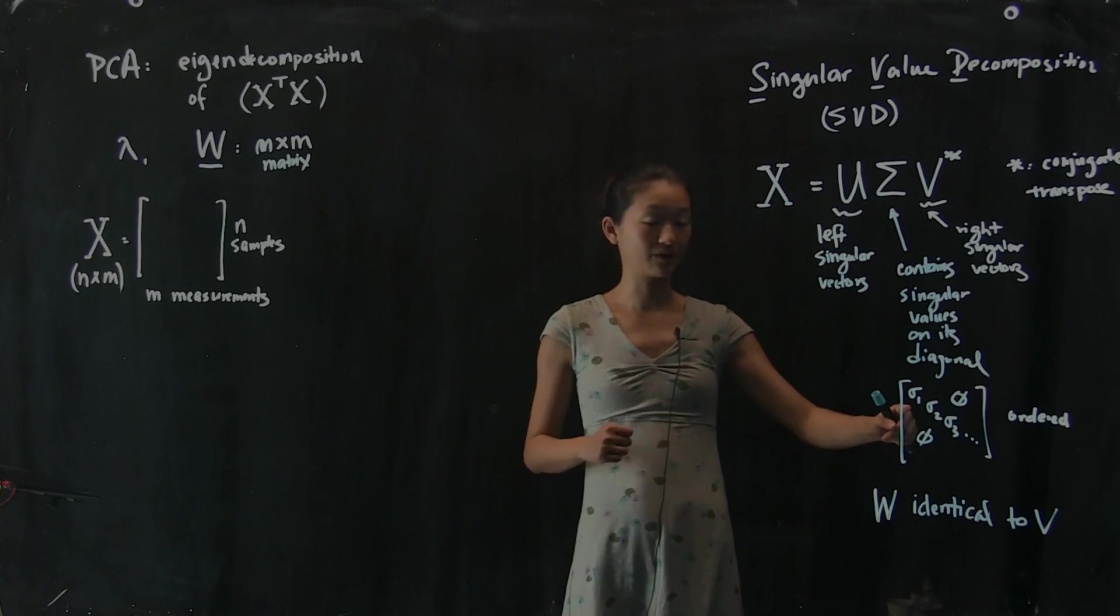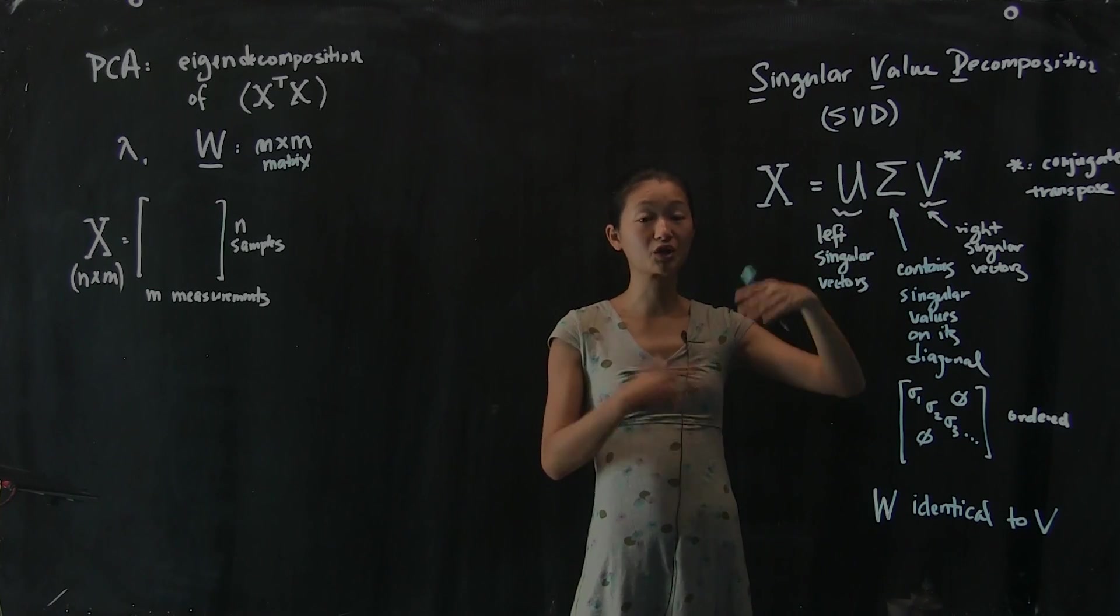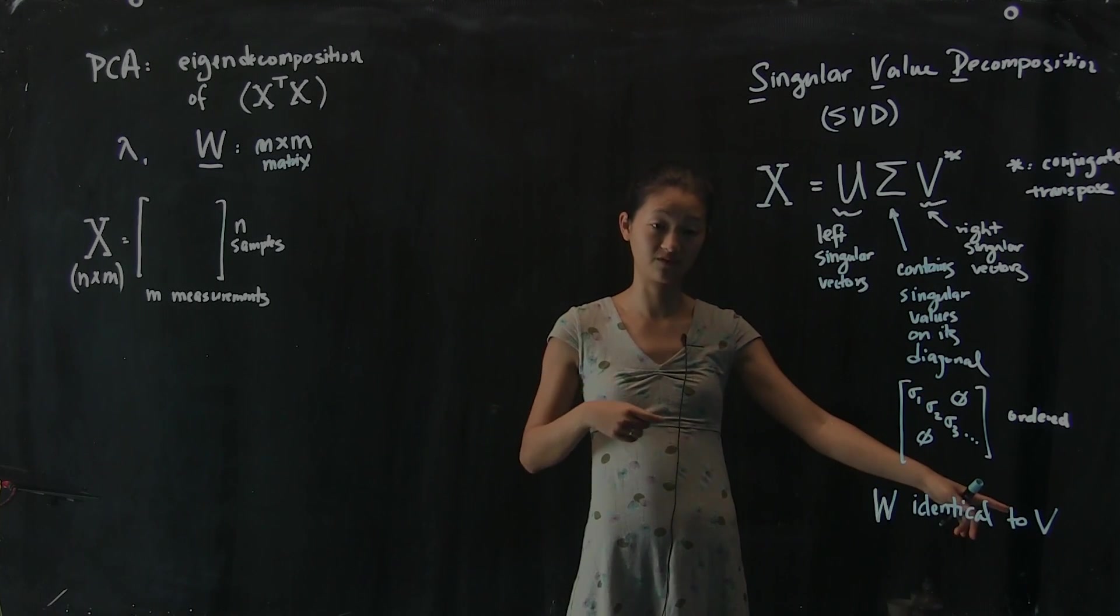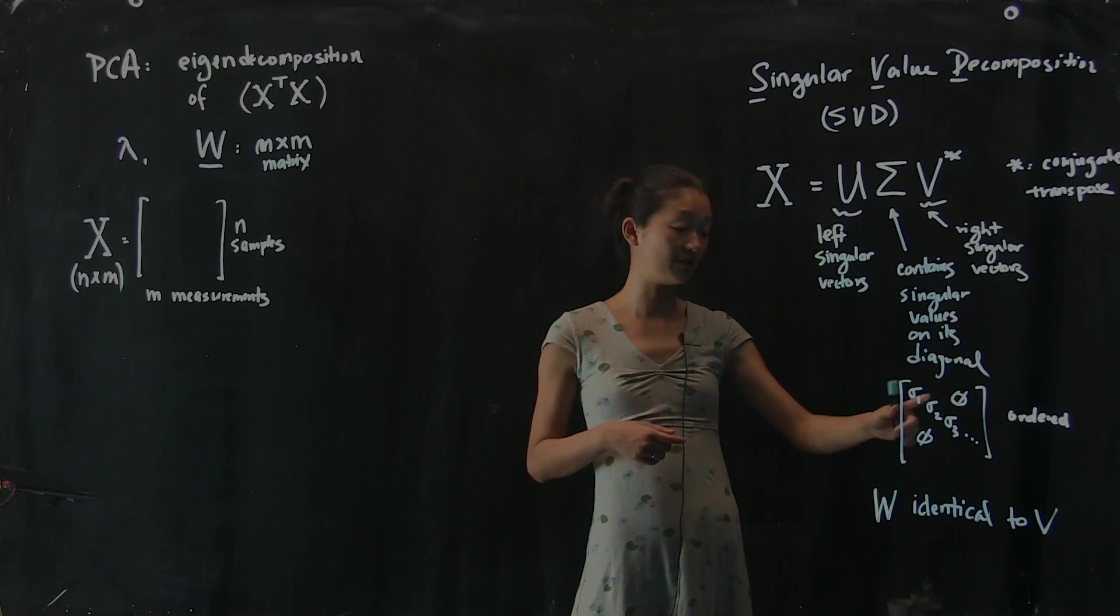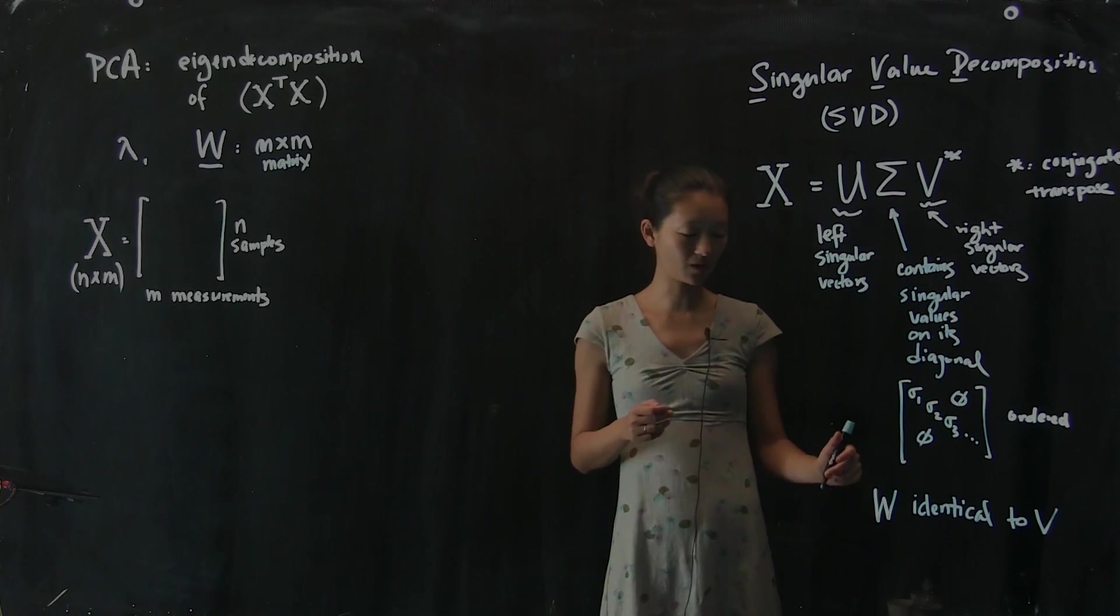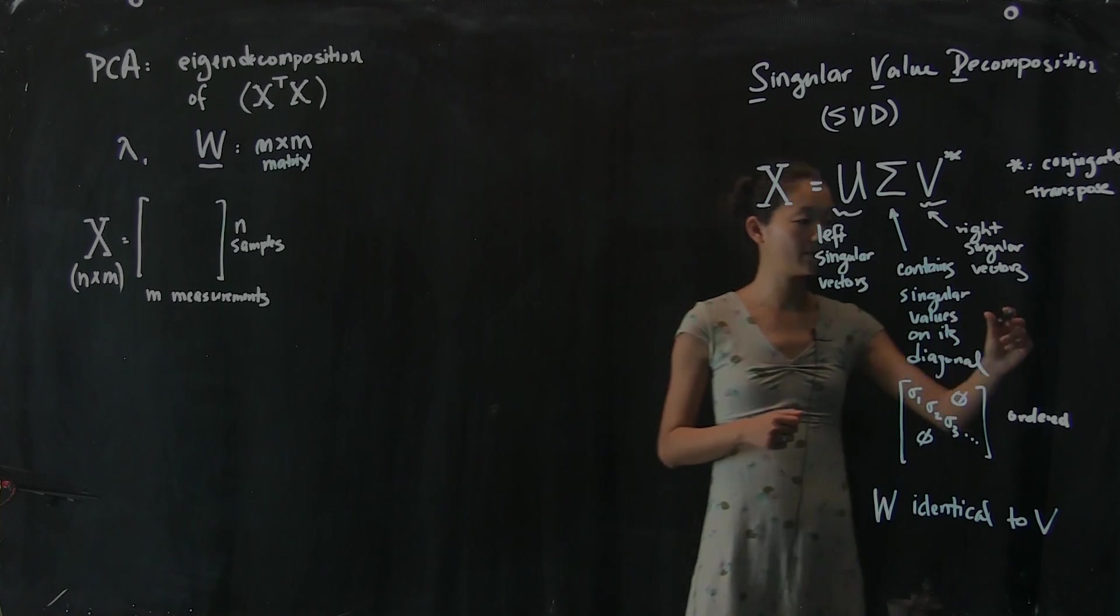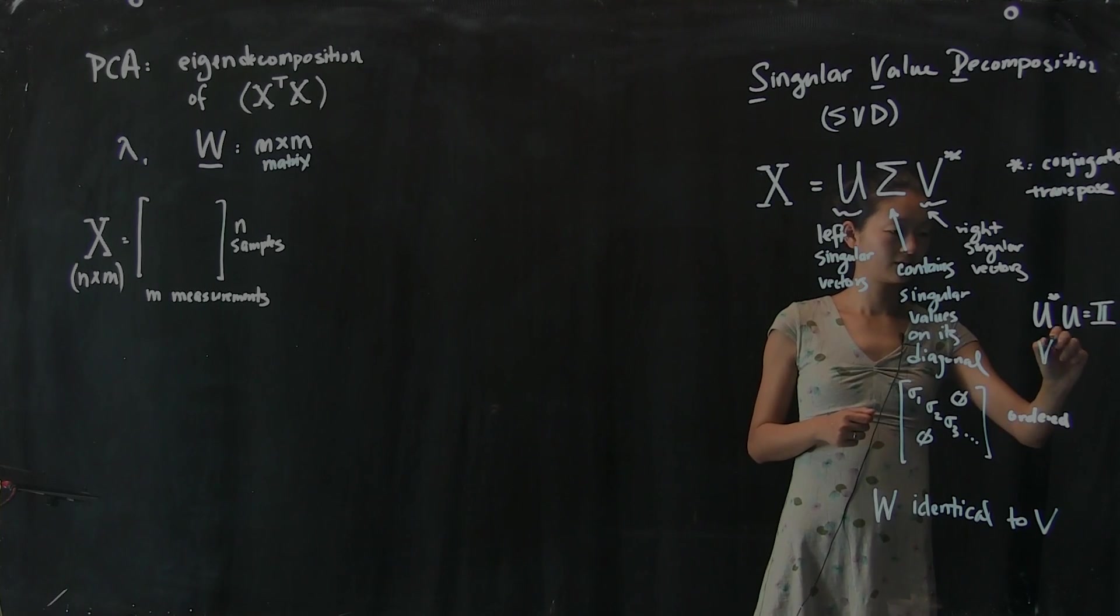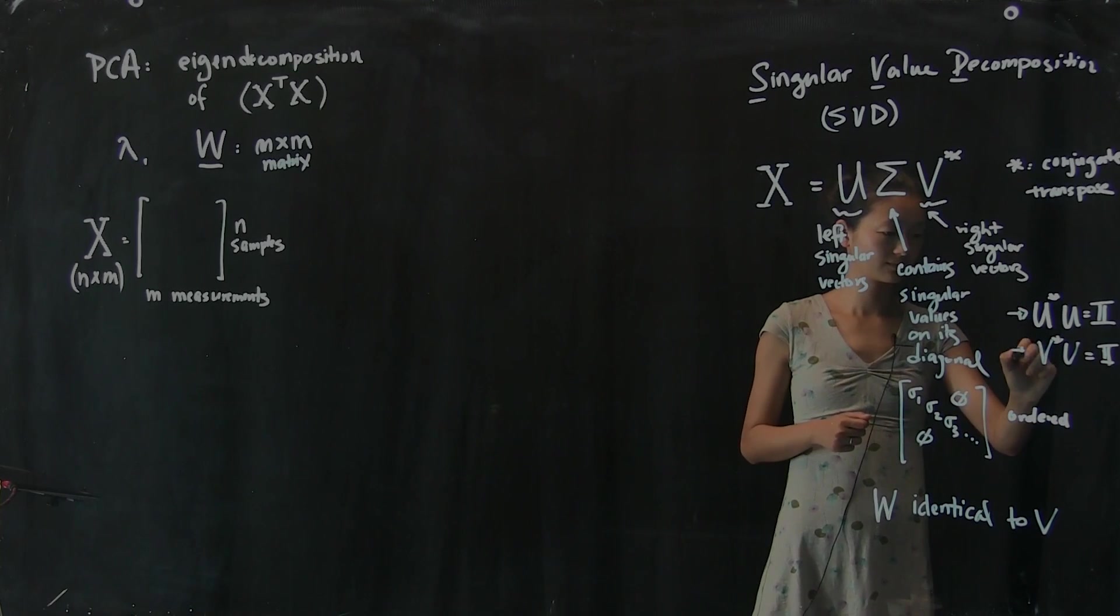Since the first singular value corresponds to the first column of U and the first column of V, you can interpret them in a very similar way using the intuition we talked about earlier with interpreting the columns of W, because W is identical to V. So the first column of V corresponds to the largest singular value. The second column of V corresponds to the next smaller singular value. That's a nice property. The other property that's really nice is that these U and V's are unitary matrices. And that means that U star times U is the identity matrix, and V star times V is the identity matrix. These are nice properties.